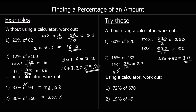For fifteen percent: ten percent of thirty-two is three point two, and five percent is half of that — one point six. So fifteen percent is ten percent plus five percent: three point two plus one point six is four point eight. Since it's money, that's four pounds eighty.